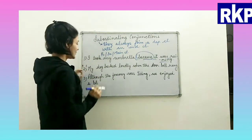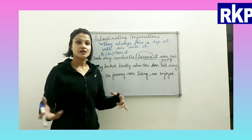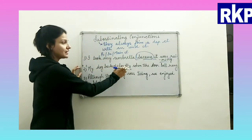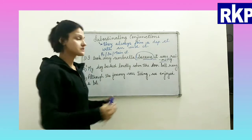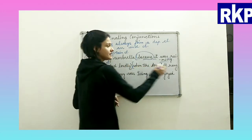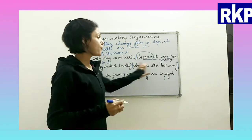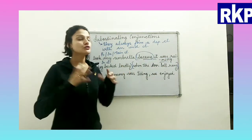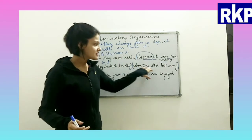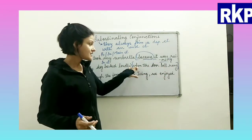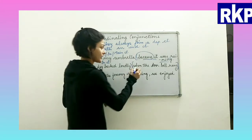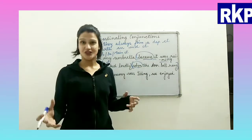Second sentence: 'My dog barked loudly when the doorbell rang.' 'My dog barked loudly' makes complete sense — that means it is the independent clause. 'When the doorbell rang' is the subordinate clause. To know the complete picture, we need to read the independent clause as well. 'When' is the subordinating conjunction here.